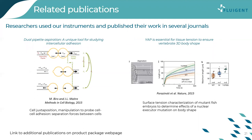I want to highlight some papers where our devices played a key role. In the first, a group from Institut Curie in France and the European Molecular Biology Laboratory in Germany used two micropipette aspiration setups to perform cell juxtaposition and manipulation, probing cell-cell adhesions and characterizing separation forces between cells. In the second paper, a group from the Department of Biology and Biochemistry at the University of Bath performed surface tension characterization of mutant fish embryos to determine the effect of a nuclear effector mutation on embryo body shape.